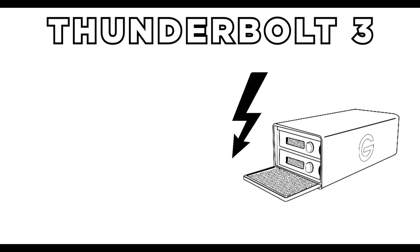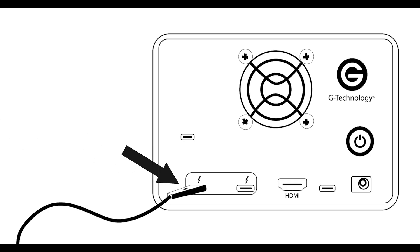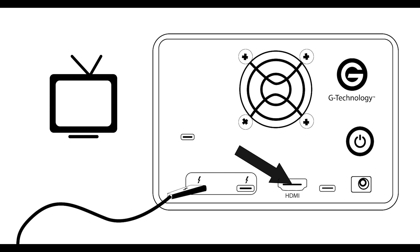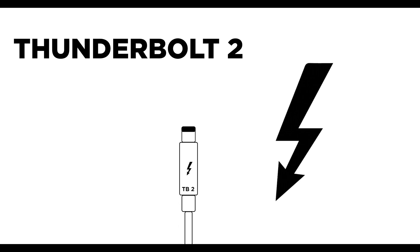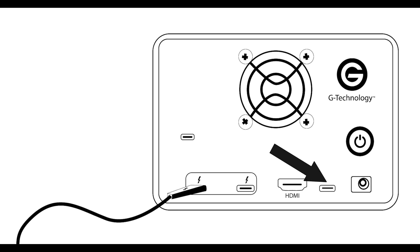Like most G-Technology Thunderbolt drives, you can easily daisy chain up to six drives via the Thunderbolt connection. I'll put the link down below for this drive if you want to get it for yourself. This drive also has a built-in HDMI port which will allow you to add an additional video display. This drive is Thunderbolt 3, but it is backwards compatible with Thunderbolt 2 computers using a Thunderbolt 3 to Thunderbolt 2 adapter. There is also a USB-C port available, and it is backwards compatible with USB 3 or Thunderbolt 3 with the included cable.